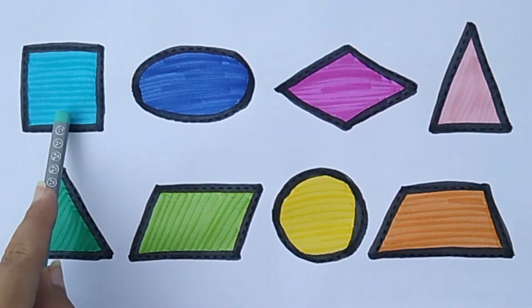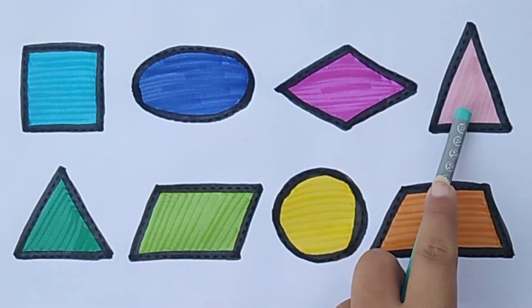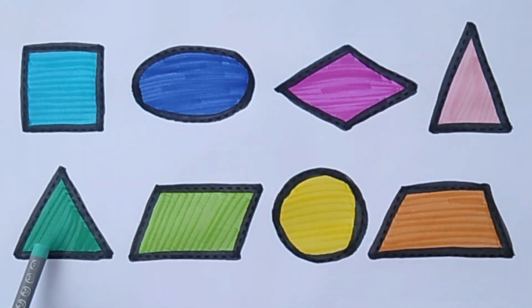Square. Oval. Diamond. Right-angle triangle. Triangle. Parallelogram. Circle. Trapezoid.